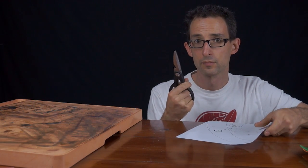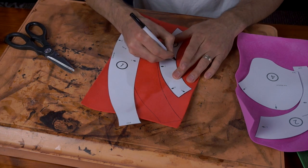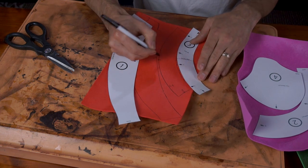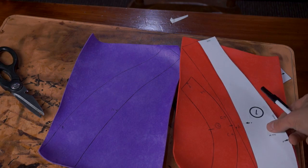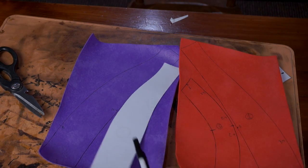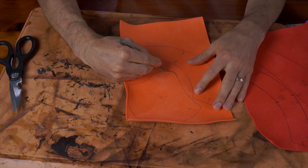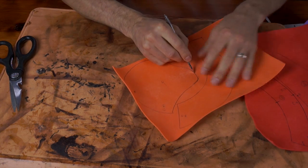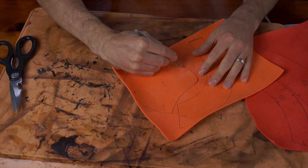Cut out your pattern. Trace them onto the foam, being sure to copy all the markings for future reference. When cutting two of the same piece, be sure to flip the pattern over for the second one. Otherwise, half your hat will have the texture on the outside and half will have the texture on the inside. And cut it out.